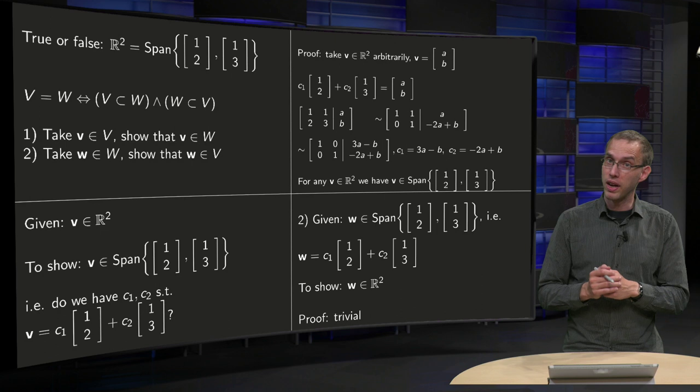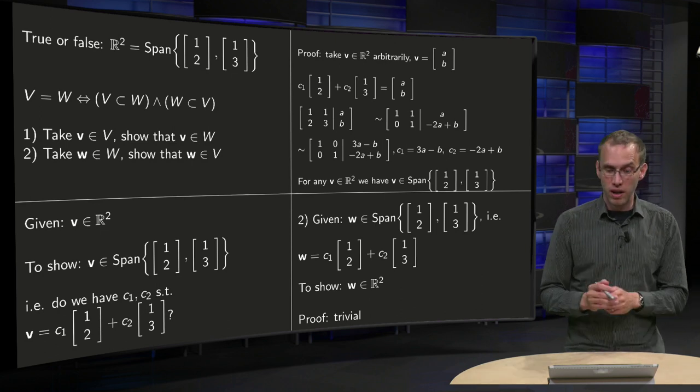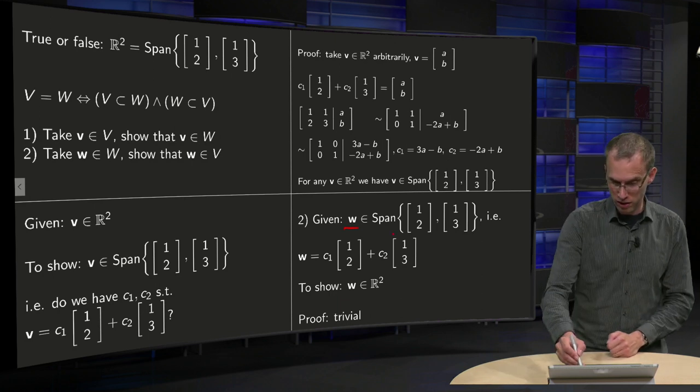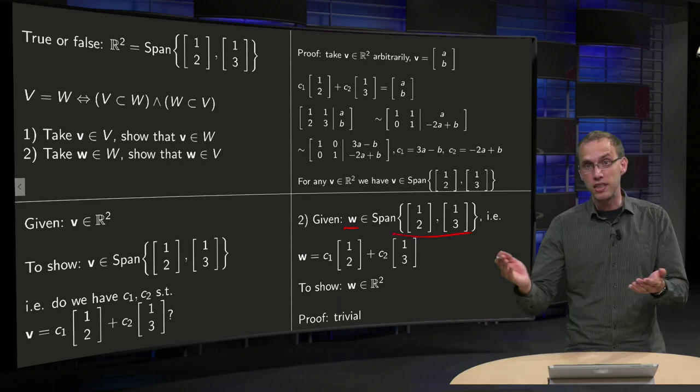Now the other way around. We have to show that given any w in the span of those two vectors, we also have to show that this w is in R².